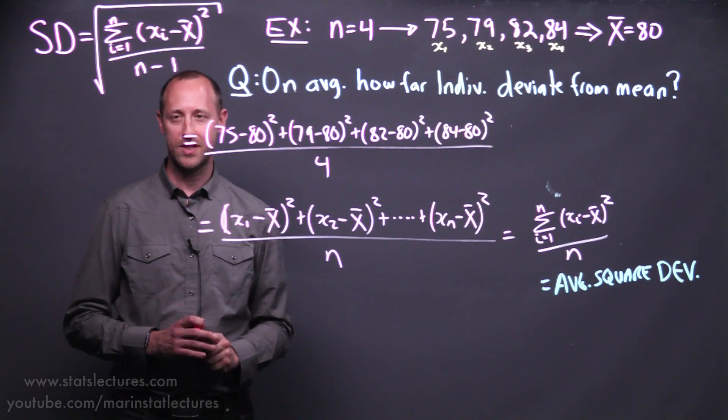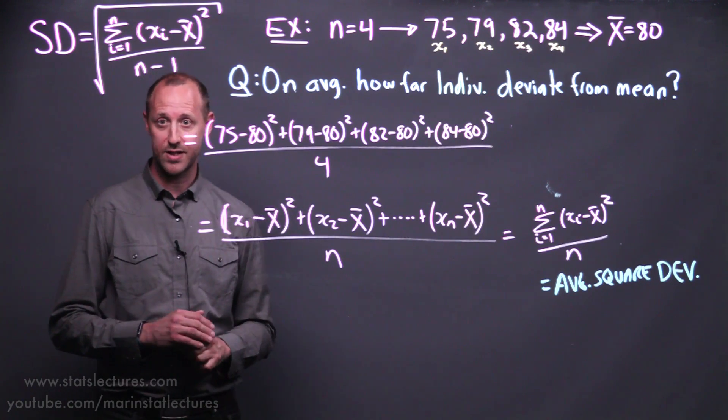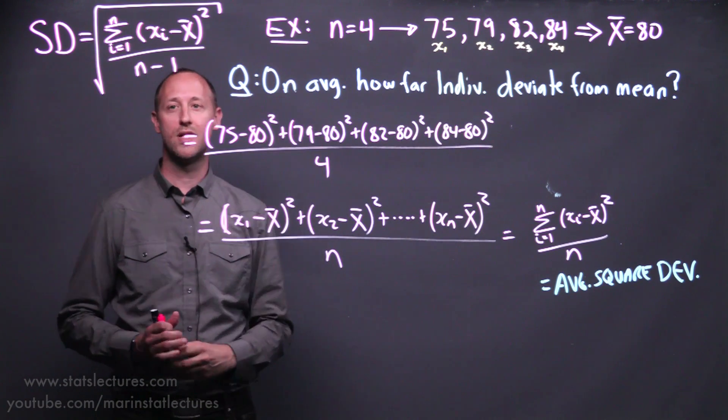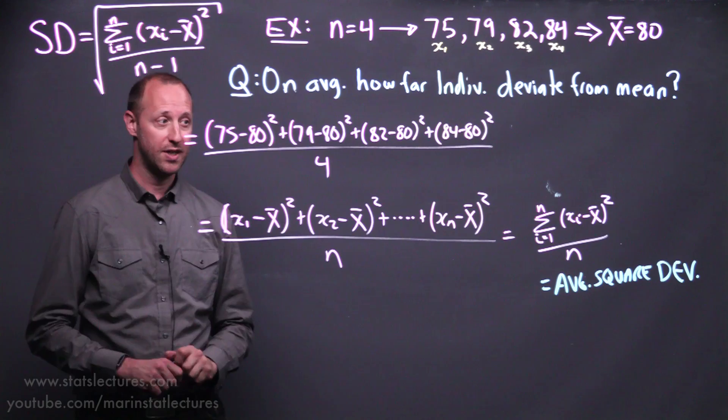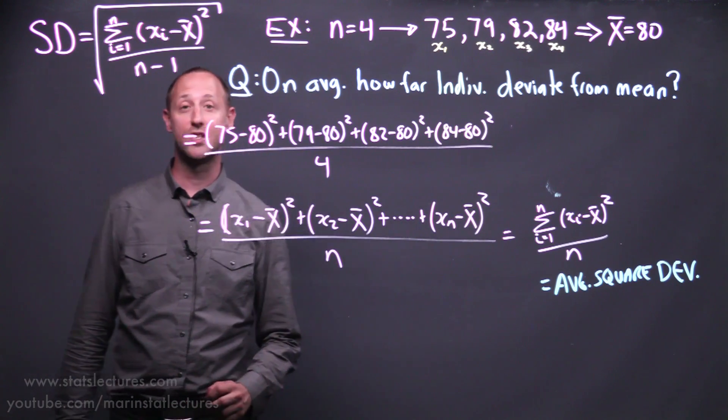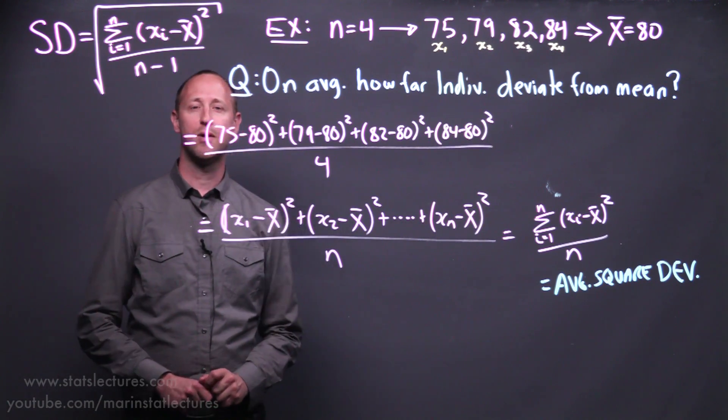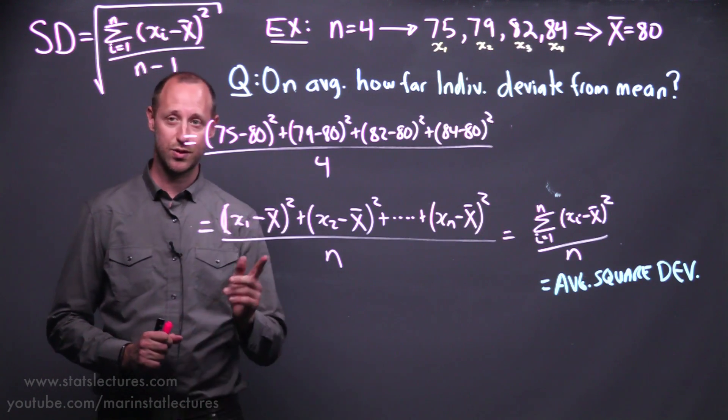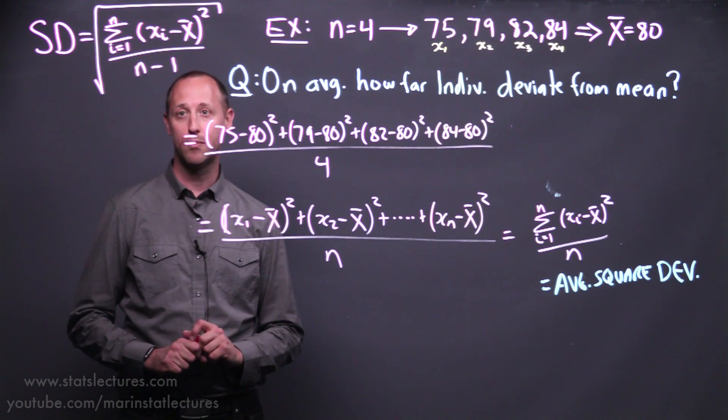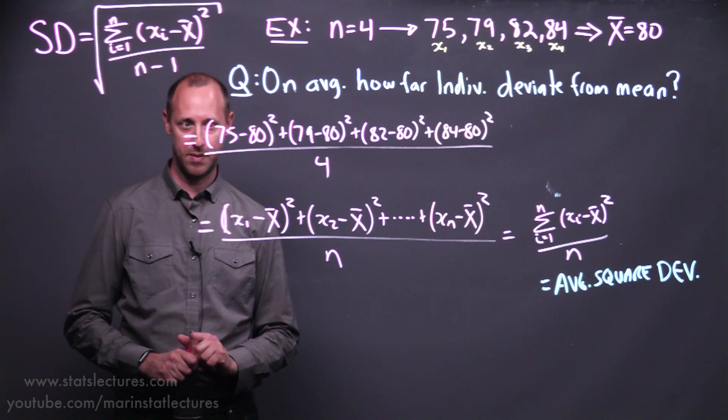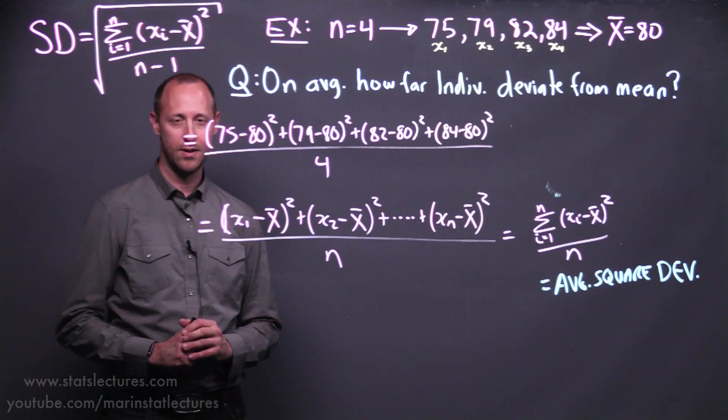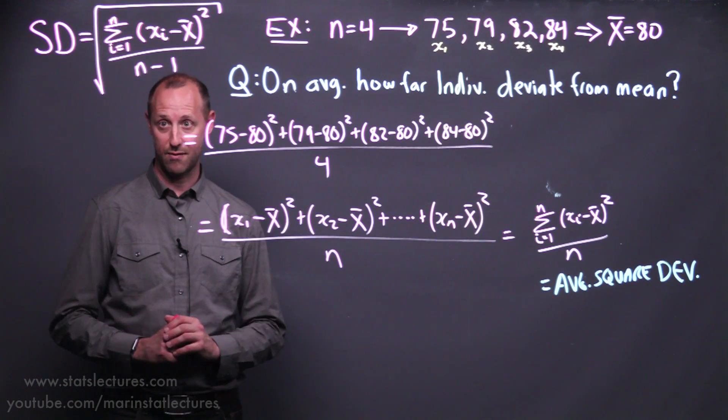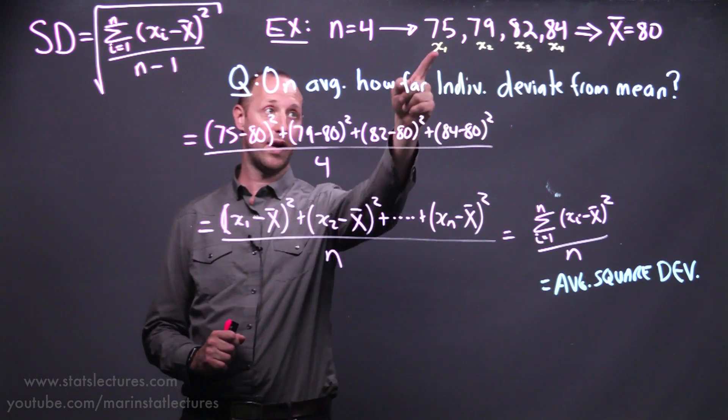Now, one problem with this is that the units of the variance are in the units of our variable x squared. So if these here represent class grades as a percentage, this variance tells us it's in units percentage squared. So suppose this came out to be 15.3. What that would tell us is on average, an individual's grade moves about 15.3% squared from the mean. And that doesn't really have a meaningful interpretation. So we need to find a way to get our units back to percentage itself. Get back to the units of our x variable.